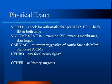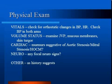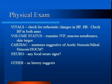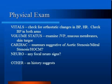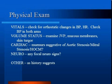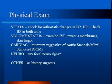On physical exam, you want to check the vitals. Check for orthostatic changes in blood pressure or heart rate. Orthostatic changes are defined as a drop in systolic blood pressure of 20 mmHg or an increase in heart rate of 30 beats per minute when moving from lying to sitting or from sitting to standing. Check the blood pressure in both arms to help rule out aortic dissection. Assess the patient's volume status — a flat JVP, dry mucous membranes, and increased skin turgor may suggest hypovolemia as a cause.